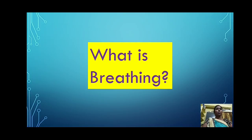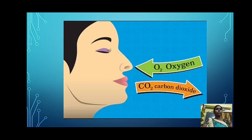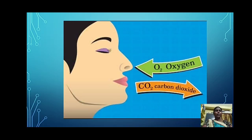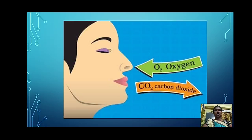Children, tell me, what is breathing? The process by which air goes in and out of our body is called breathing. Air going in is called inhalation and air going out is called exhalation. The combination of inhalation and exhalation is called breathing.